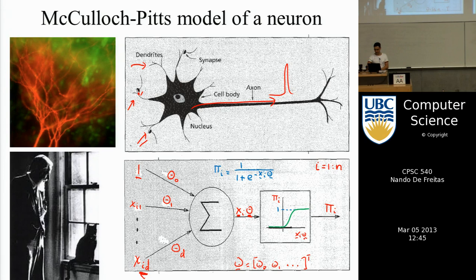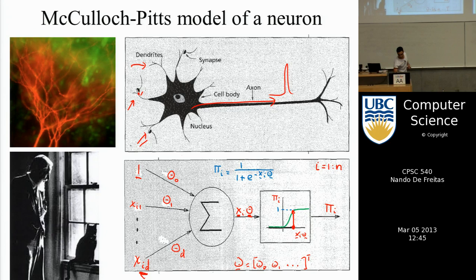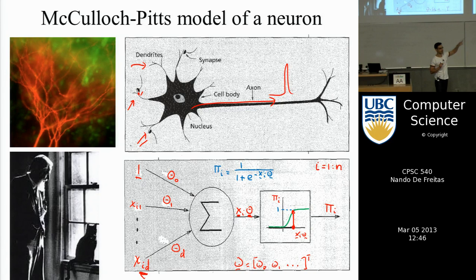Depending on what that input is, this is the level of firing of the cell. The cell will have a non-linearity — a function that looks like an S, also called the sigmoid function or the logistic function. That function is simply given by this expression. Essentially, if the level of excitation, which is x times theta, is above a certain threshold, the neuron is on — we're on the top part of the function. If below the threshold, the neuron is off.